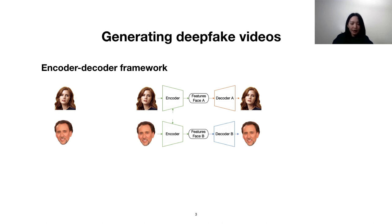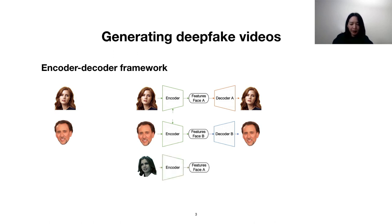The final step is to do the face swap itself. We will take Amy's face, feed it through the shared encoder, and take the disentangled output representation and feed it through Nicolas's decoder. The result is the swapped face — that is, with Amy's expression but with Nicolas's identity. And with that, we've created a face swap deepfake.